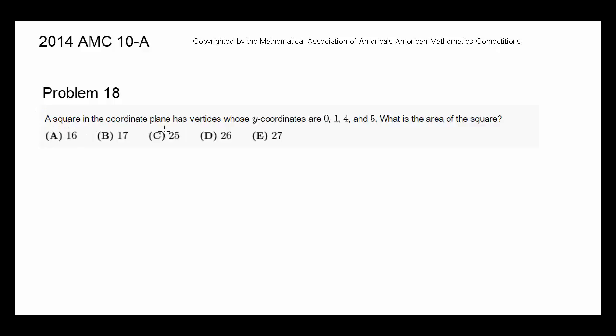A square in the coordinate plane has vertices whose y-coordinates are 0, 1, 4, and 5. What is the area of the square?